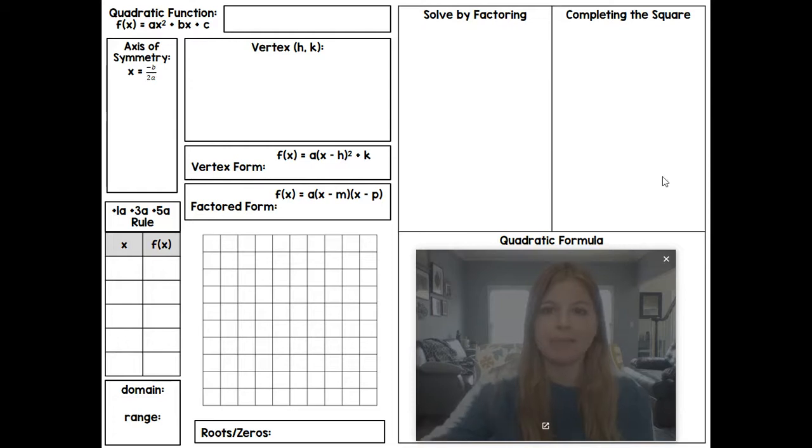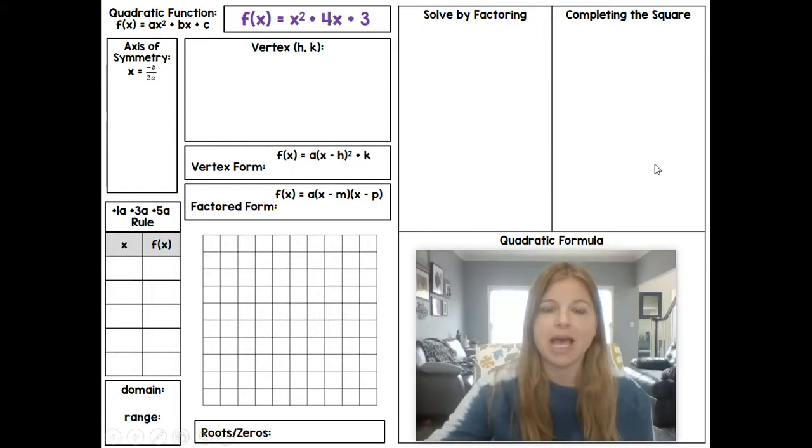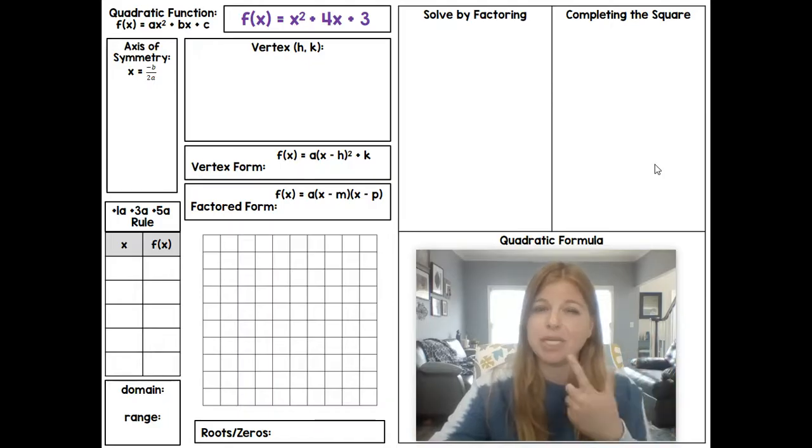All right, so the function we're going to take a look at is f(x) = x² + 4x + 3. So nice basic function, you've probably graphed this function before, something similar to it. You've also probably factored this before and done completing the square and the quadratic formula. That's a pretty common quadratic that we're going to be taking a look at. So the first thing I'd want to do if I wanted to do the graphing method is to first find the axis of symmetry.